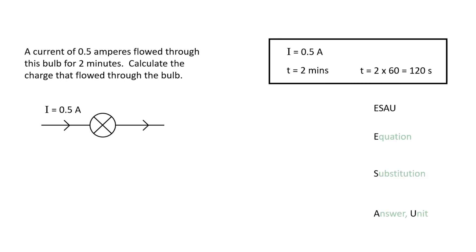Then we're going to use ESAU: equation, substitution, answer, unit. The equation is Q equals It. Charge equals current times time. Then we substitute: Q equals 0.5 times 120. We work out the answer: 0.5 times 120 is 60, and the unit is the coulomb. So the charge is 60 coulombs.